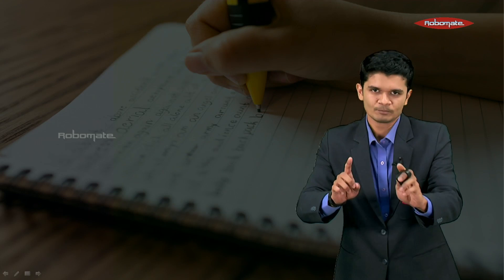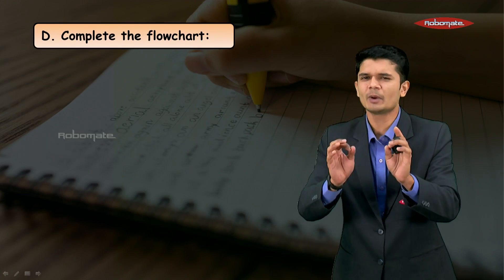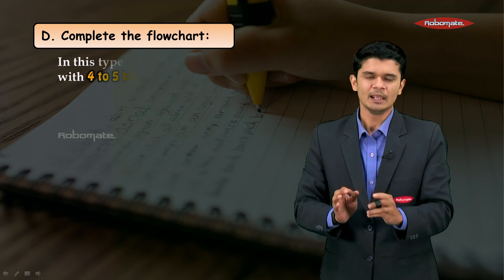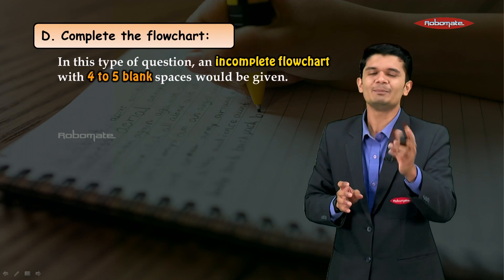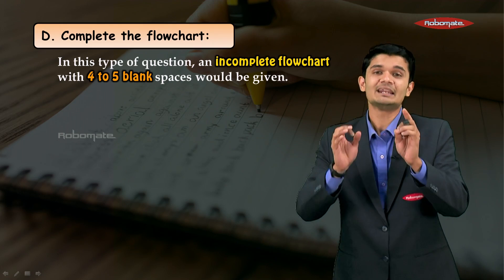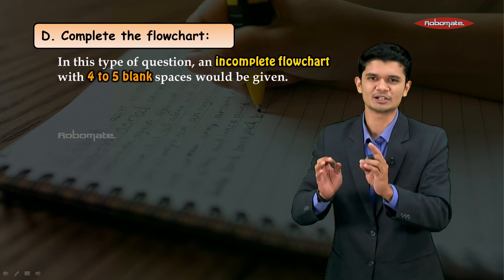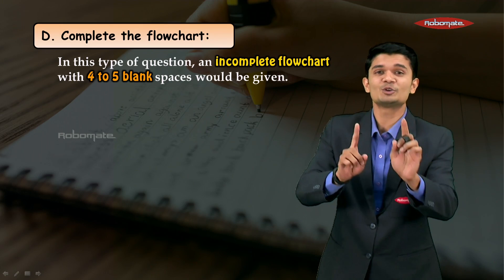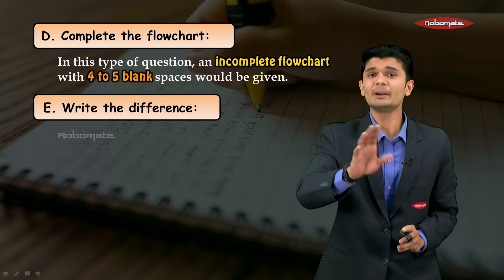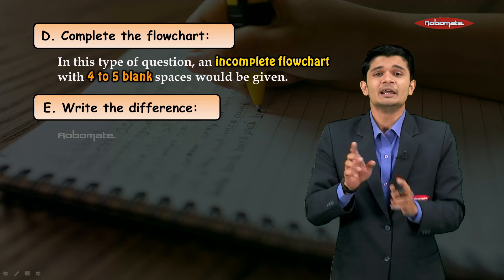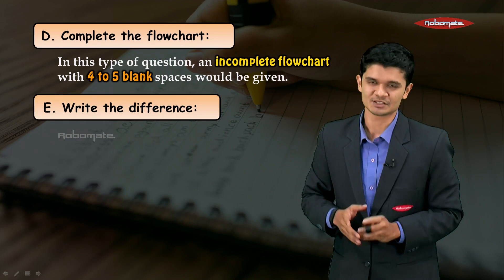For the next type, we have complete the flowchart — these questions are very scoring. You will be given a flowchart with around four to five blank spaces in it. Our textbook has some limited chapters containing flowcharts, so make sure to go through those chapters very carefully and complete the flowchart.